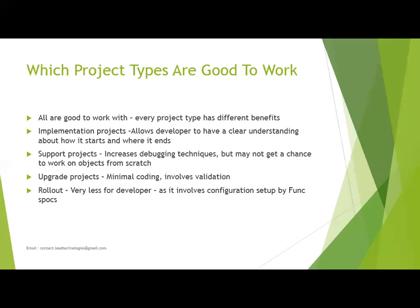An implementation project gives a developer clear understanding where you build everything from scratch. A support project enhances your analytical skills through bug fixes and helps you understand how things work. Someone coming from support to implementation may have better debugging skills than a developer who only worked in implementation. An upgrade project generally has very little coding — it just requires replacing table names or column names. A rollout is also less developer-intensive as it's mostly a functional configuration task.